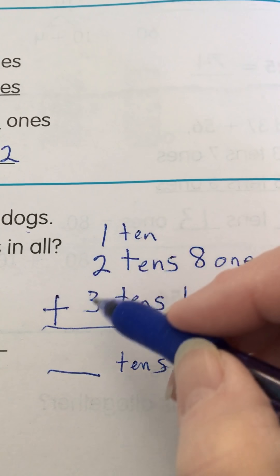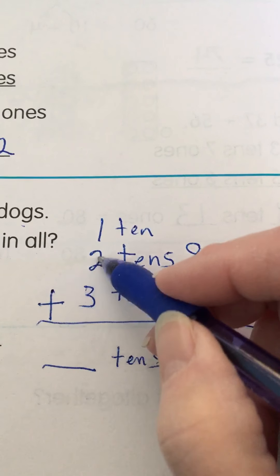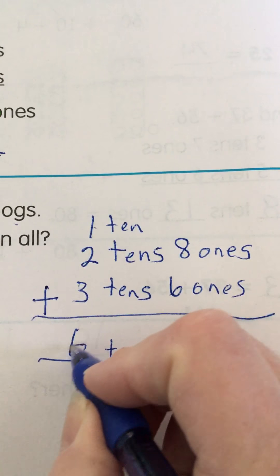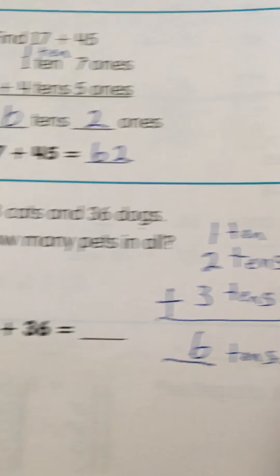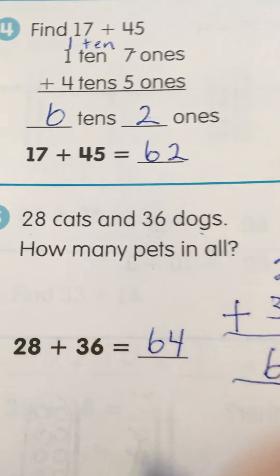Now I'm going to add up my tens. Three plus two is five. Plus one more is six. So I have six tens. Four ones. So my answer would be sixty-four.